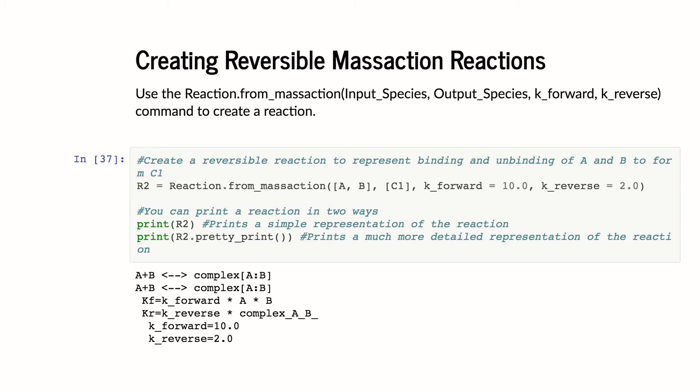A and B go to this complex. And C1 goes back to A and B. And you'll see this is forwards and backwards. So you have the two arrows there. And if you look at the more complicated way of printing things, it's going to show you a forward propensity and a reverse propensity and the parameters for each of them.